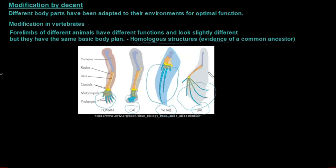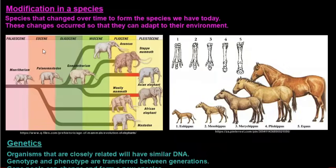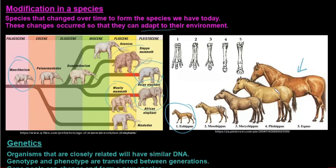Now we're going to look at modification in a species - species that changed over time to form the species we have today. These changes occurred so they could adapt to the environment. Looking at elephants today, we have the Asian and African elephant. They share a common ancestor which changed over time to adapt to the environment. The steppe mammoth and woolly mammoth lived in very cold periods with massive thick fur, but that changed into the Asian and African elephant based on environmental changes. The modern horse came from this little guy, and obviously changes occurred for them to adapt to the environment.